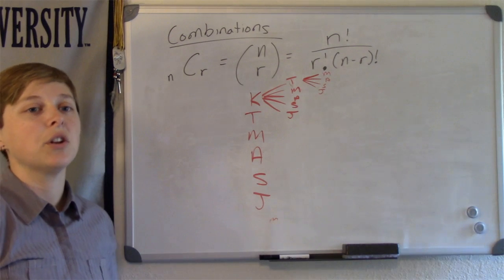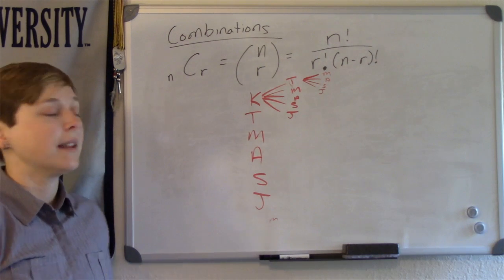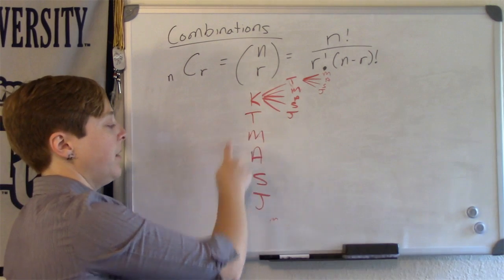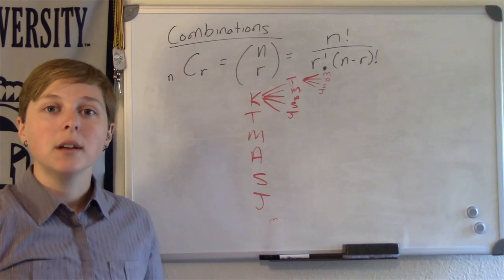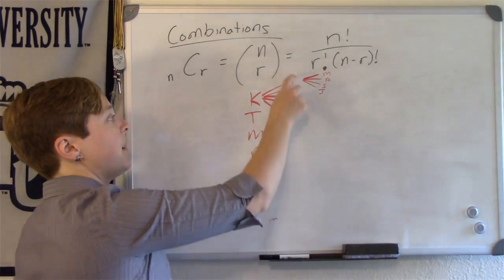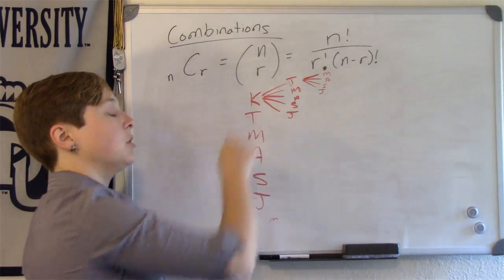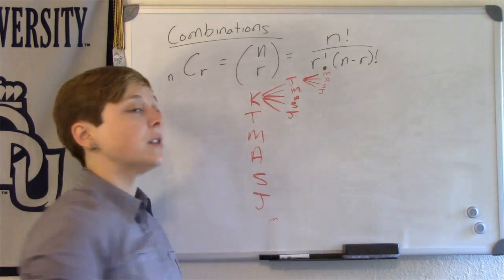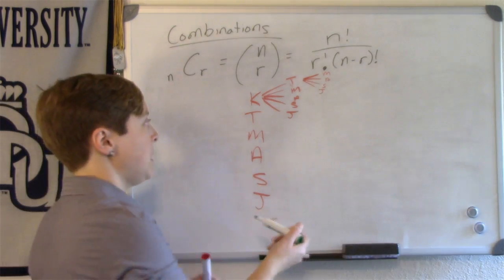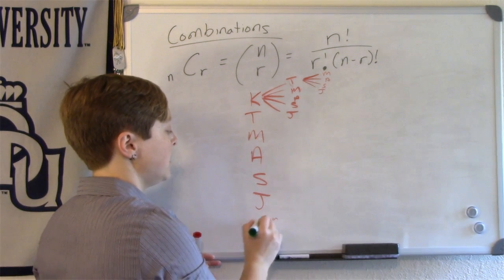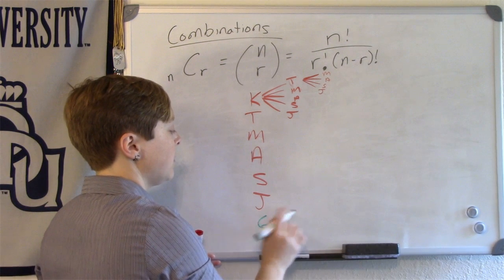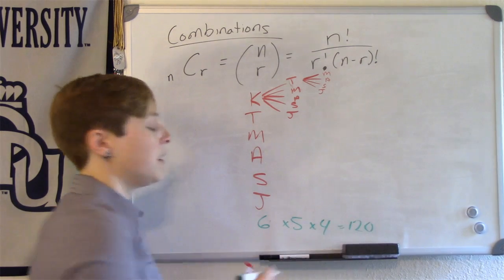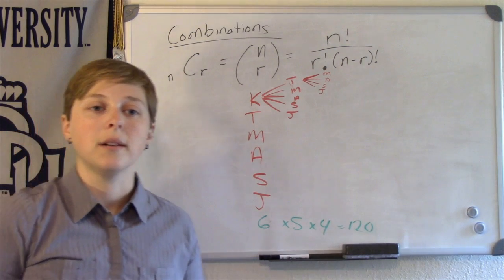This incomplete tree diagram can hopefully show us a pattern. For the first friend, I have 6 different possible choices. For the second friend, I only have 5, because I'm not going to choose Kim twice — first and second. For the third friend, I only have 4 different possibilities. So that means I have a total of 6 times 5 times 4 equals 120 total different possibilities.